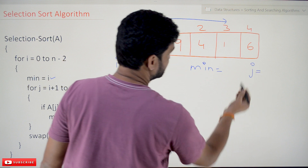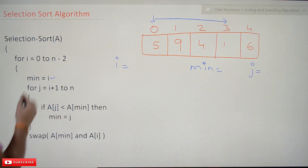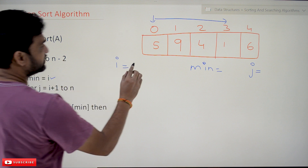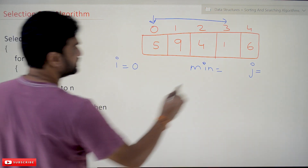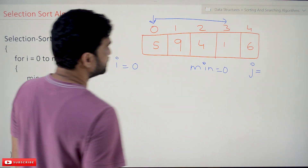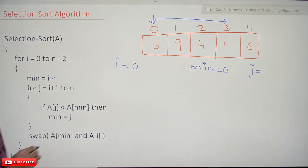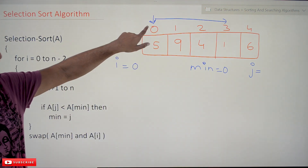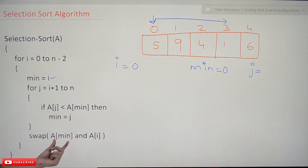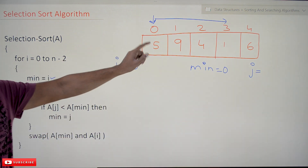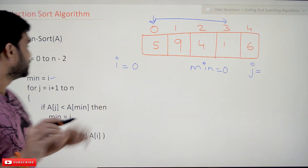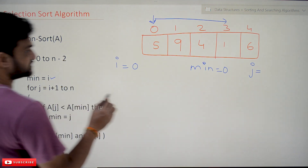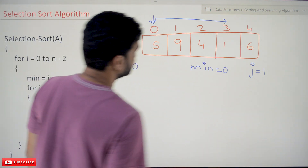Now let's trace through the algorithm. We start with i equal to 0, so min is set to i, which is 0. This means index 0 is our initial assumed minimum position. At the end we will swap a[min] with a[i], which is a[0]. For the inner loop, j starts at i plus 1, which is 1.